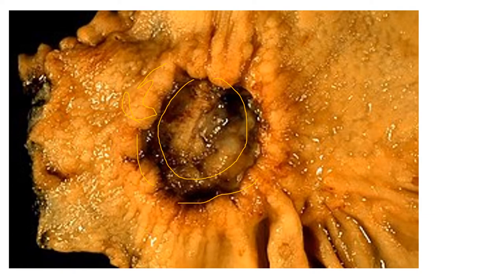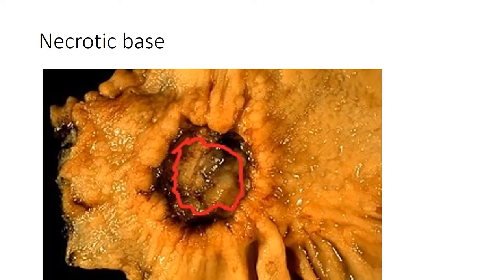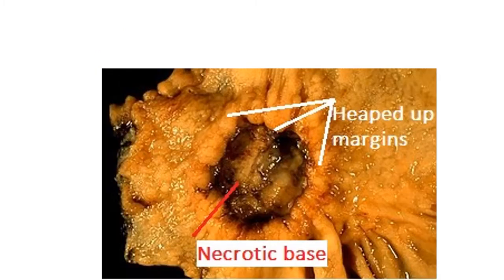The margins of the ulcer are heaped up and rounded, and there is necrosis and hemorrhage in the center. You can see redness and small nodularity surrounding this defect. So the key morphological features are: heaped-up margins that are rounded and beaded, and a necrotic base.